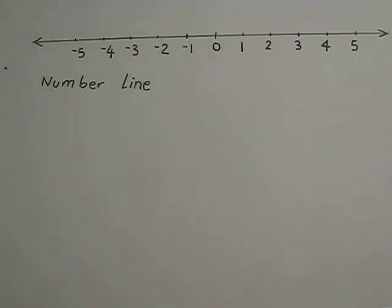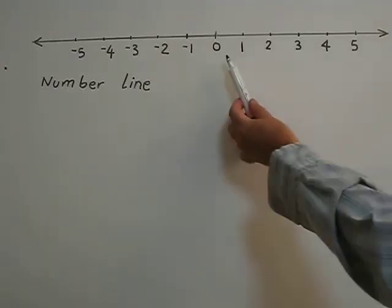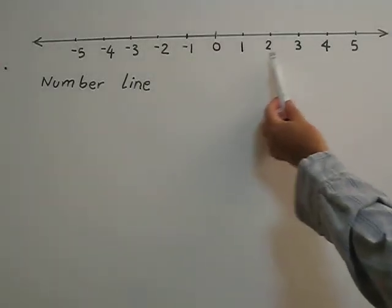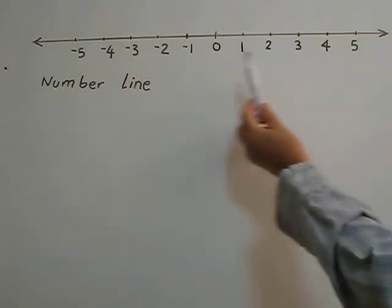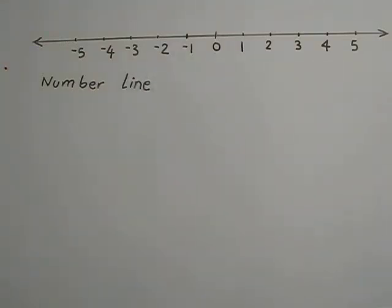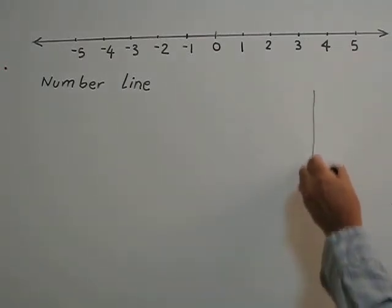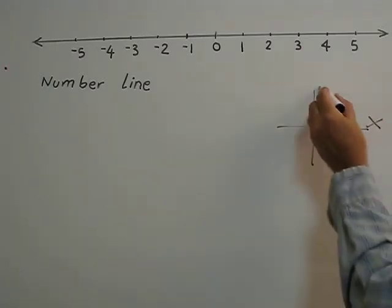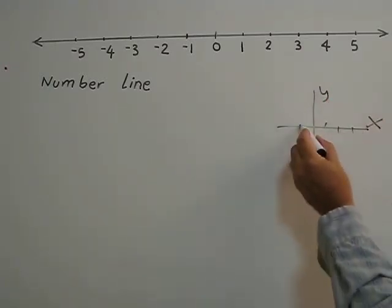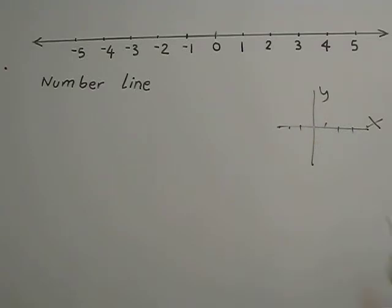I am going to talk about absolute value. Absolute value is the distance from the origin or zero on the number line. This is a number line — positive integers are on the right side and negative integers on the left side. Normally in the Cartesian coordinate system there is X and Y, which is two-dimensional, but the number line is one-dimensional.